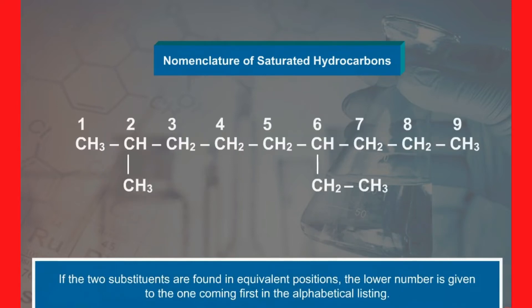If two substituents are found in equivalent positions, the lower number is given to the one coming first in the alphabetical listing.